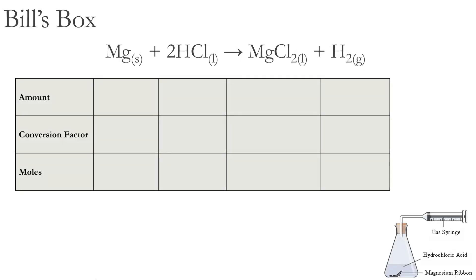At the very top we have a chemical equation showing that magnesium, a solid, reacts with hydrochloric acid to form magnesium chloride, which is a liquid, and hydrogen gas — and that's the gas we're trying to collect. Bill's Box is a graphic organizer you can draw right in a notebook or on any scrap piece of paper. I draw boxes to represent the different items and information you'll be collecting. We have three rows, and the very first row is the amount for each substance.